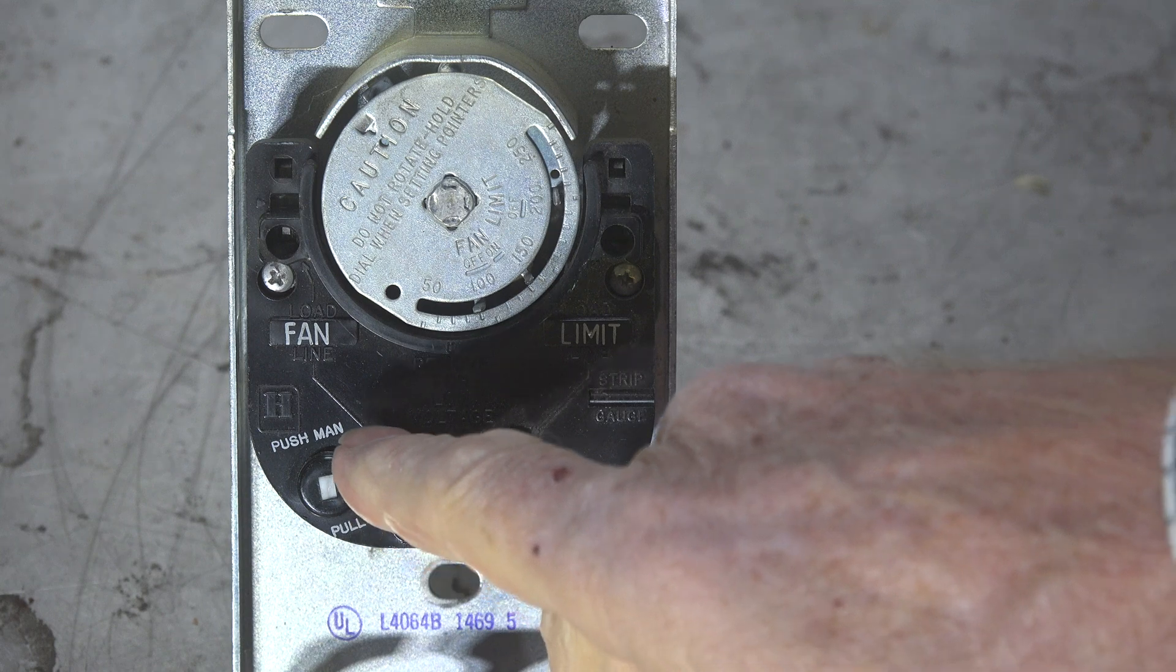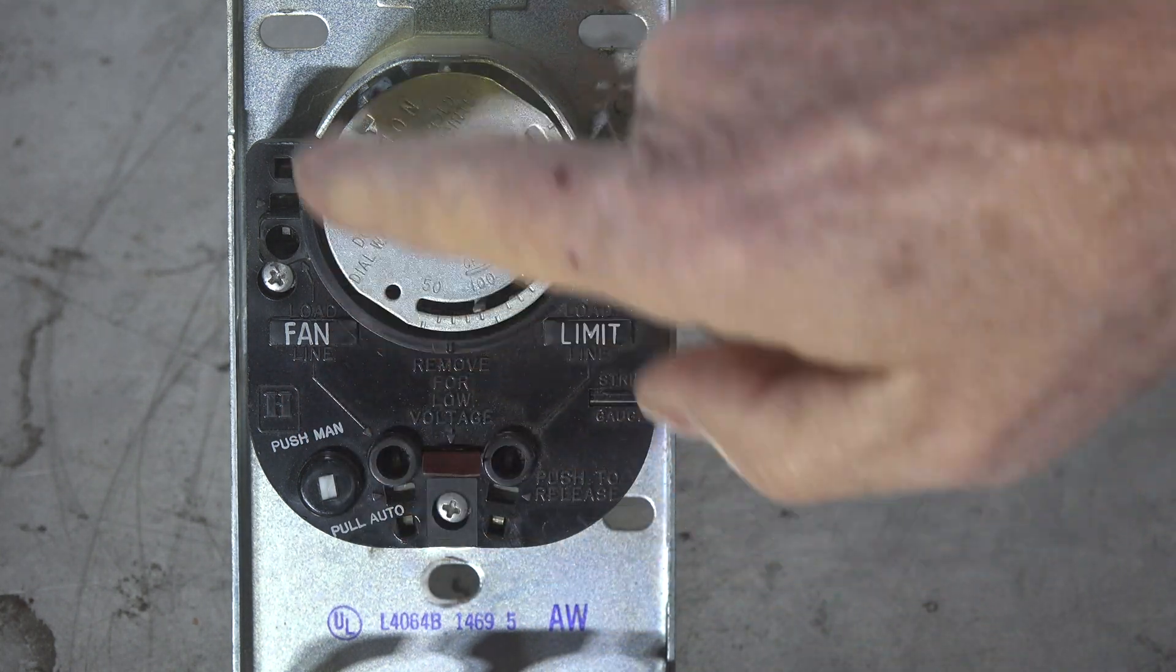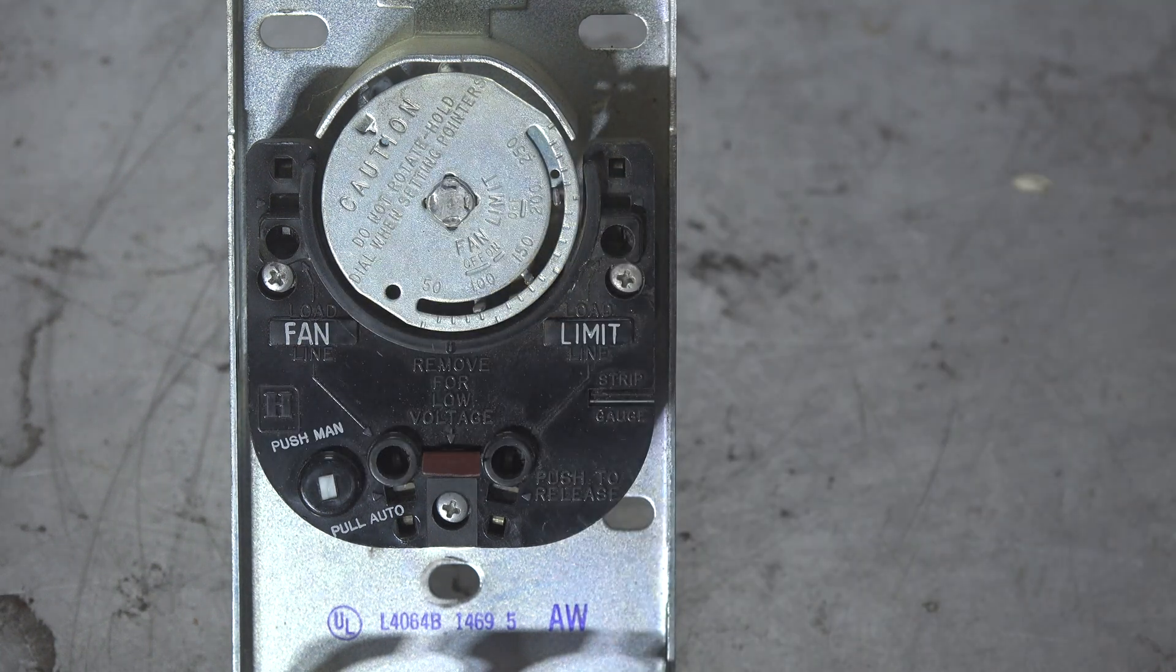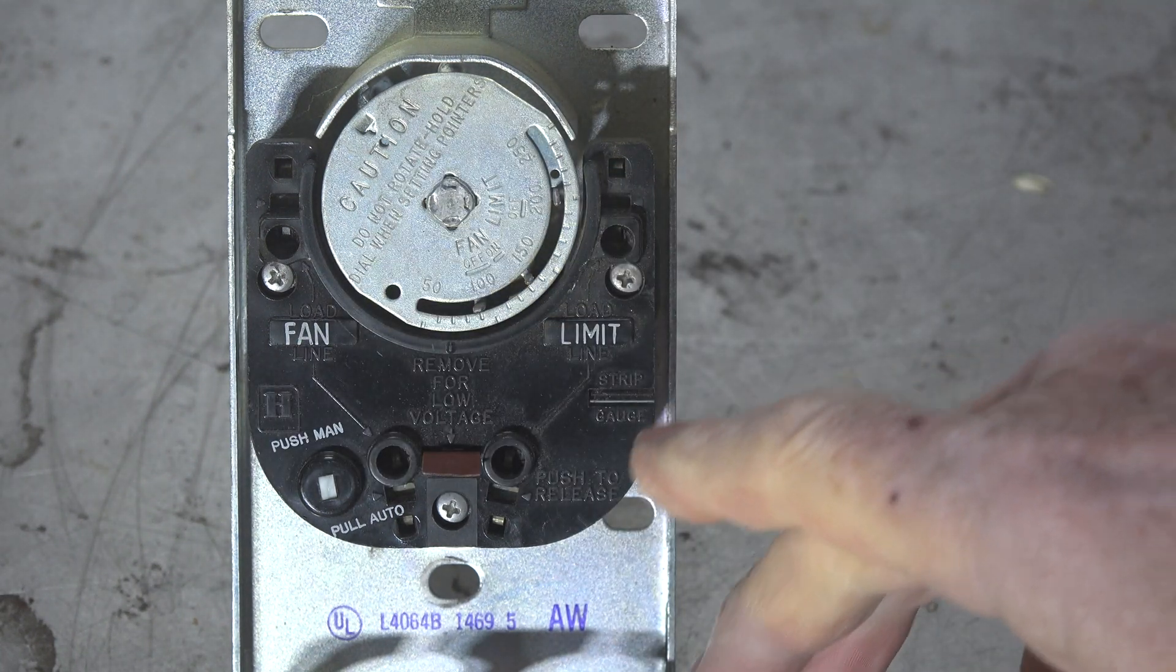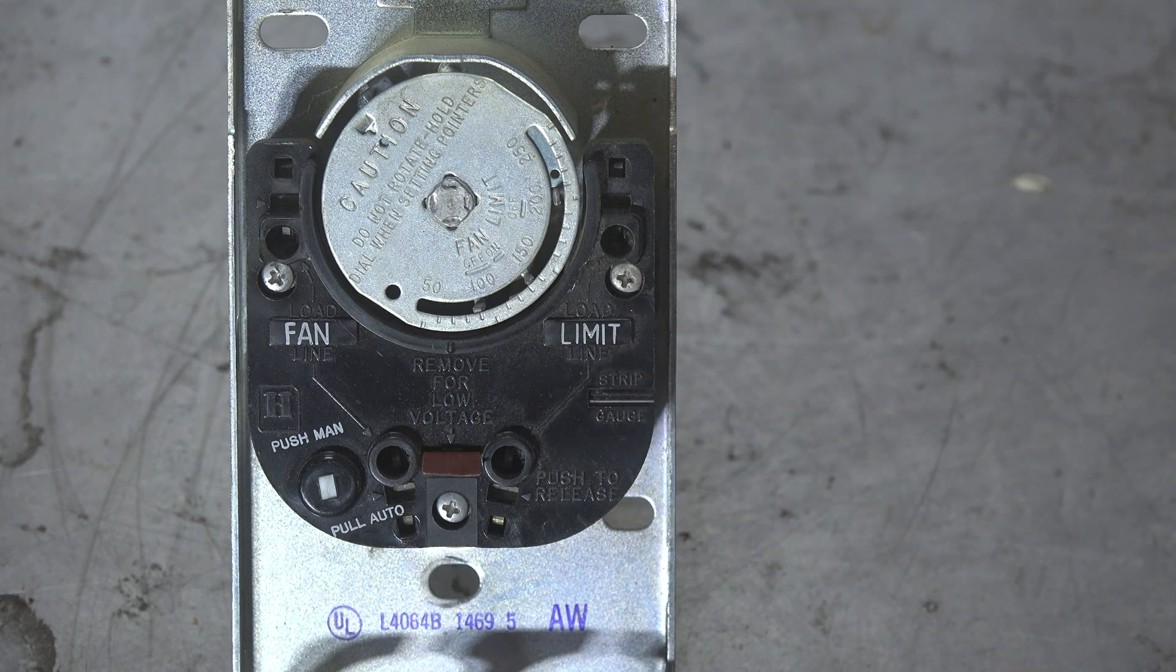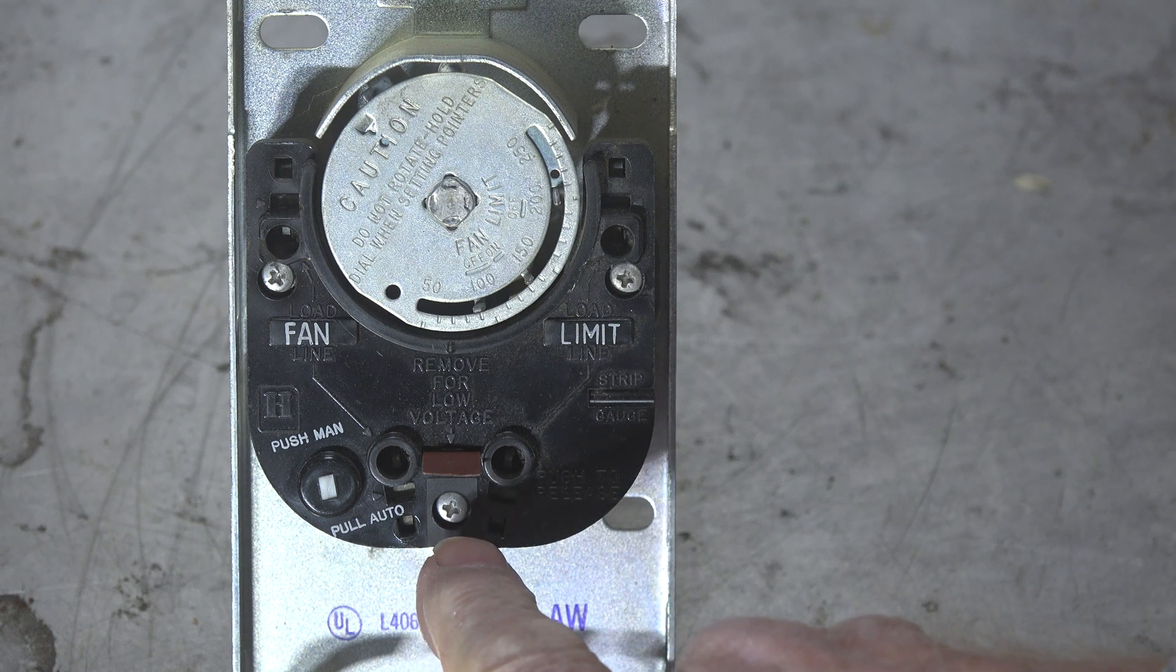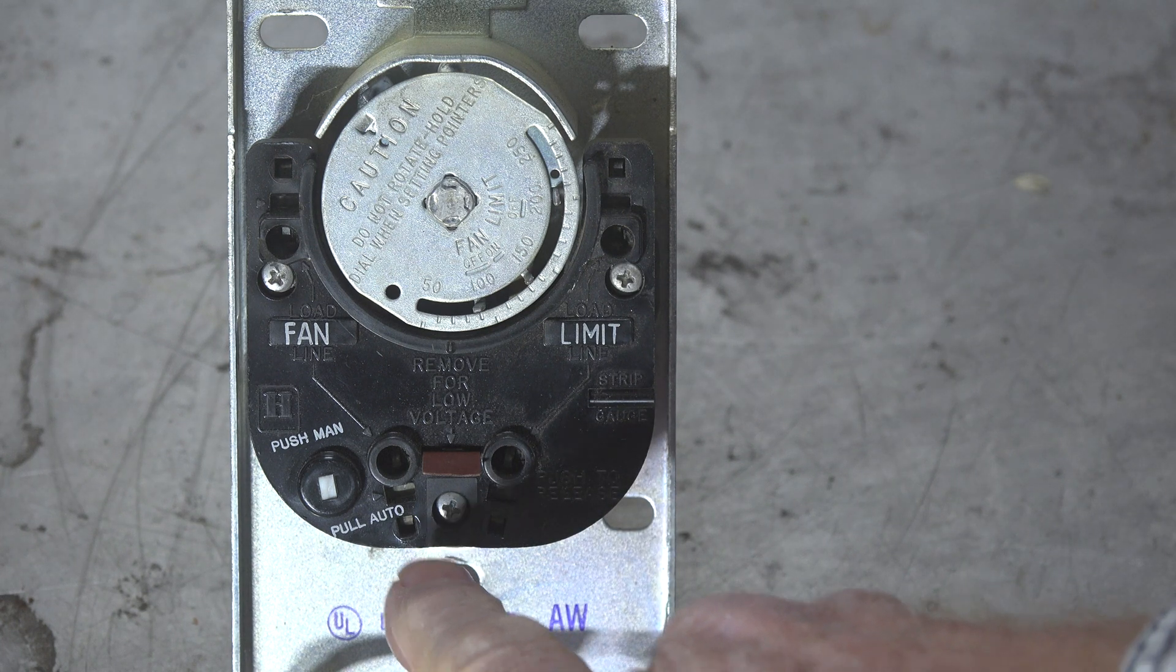This side is for the fan. You can see this wiring going up: line down here, load up there, and there's a switch in between. It doesn't really show the switch on these things. On this side it's the same thing for the limit switch.